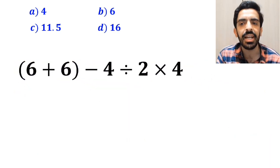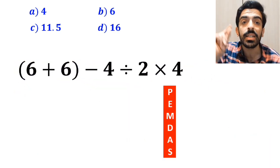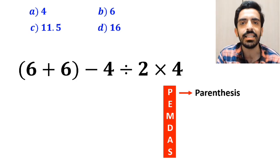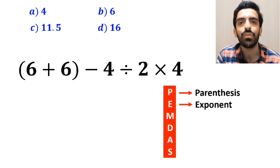To solve this question, we need to follow the PEMDAS rule step by step. In this rule, P stands for parenthesis, E stands for exponent, M stands for multiplication.